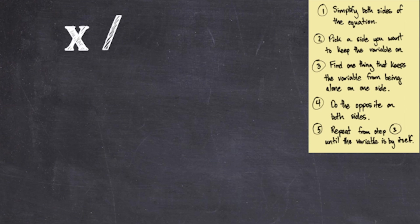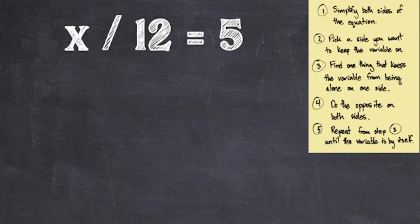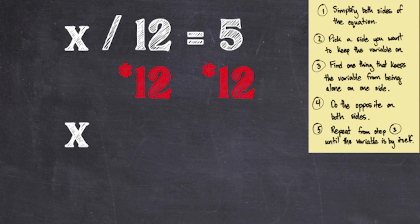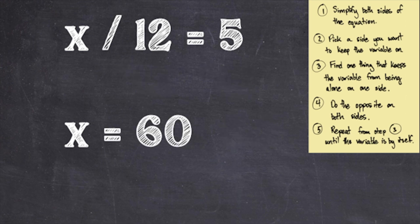Here's another one: x over 12 equals 5. Remember, when you see a fraction like x over 12, you can also think of it as x divided by 12. Step 1: nothing to simplify. Step 2: keep x on the left-hand side. Step 3: there is a division by 12 keeping x from being alone. Step 4: the opposite of dividing by 12 is multiplying by 12. Multiplying both sides by 12, the 12s cancel on the left and 5 times 12 is 60 on the right. Thus, x equals 60.